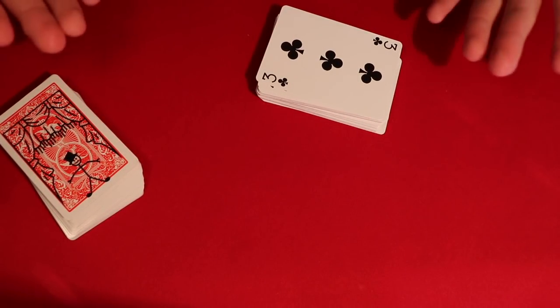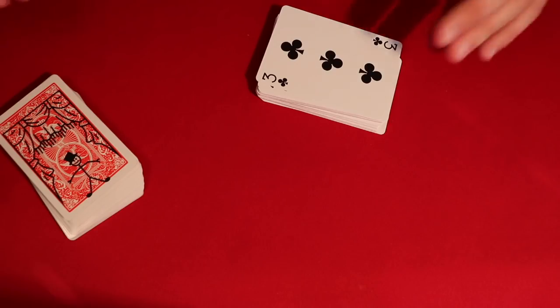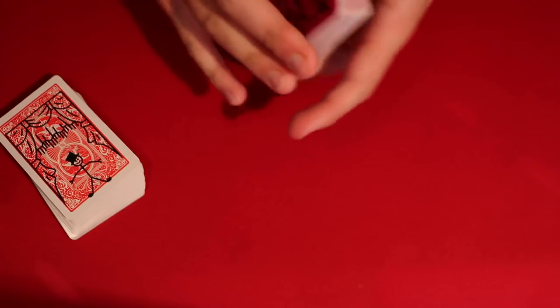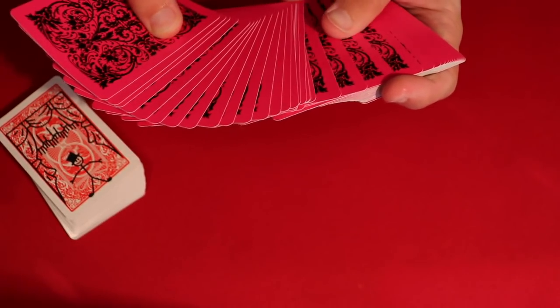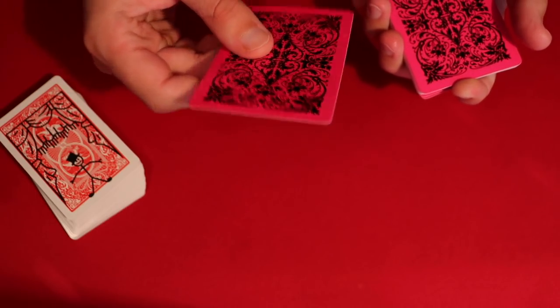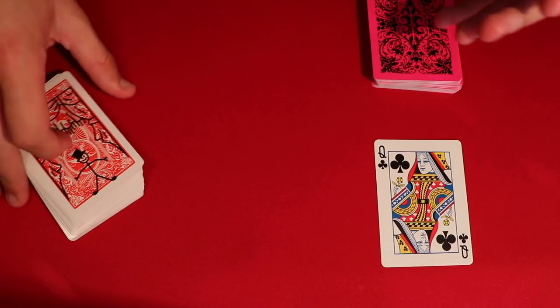So what I have you do is go ahead and think of any card you want, kind of like an invisible deck trick. Let's say you were thinking of a card. But since you're not here, I'm gonna go ahead and simulate that just by picking out a random card from this deck over here. And let's say you happen to think of the queen of clubs.